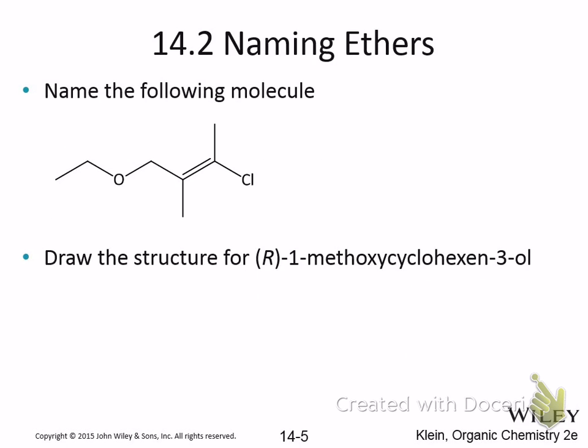We'll do some examples. Remember, the ether isn't part of the parent chain — it is attached to the parent chain. So for that top structure, what's the parent? Everything to the right of the oxygen would be the parent, and this is a substituent off of the parent chain.